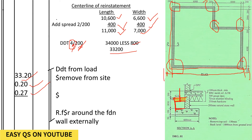We deduct this load of soil from cut away and add it to refill and ram. We had said that all vegetable soil should be taken out — this is called cut away. Now we need that soil to come back and return to ground level. We deduct that load of soil from the cutaway and add it to refill and ram.